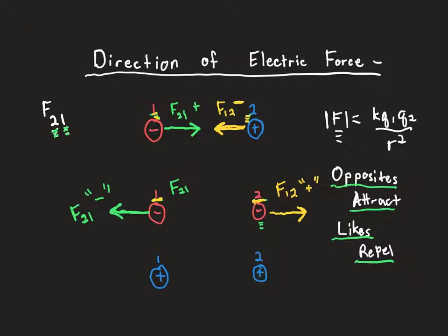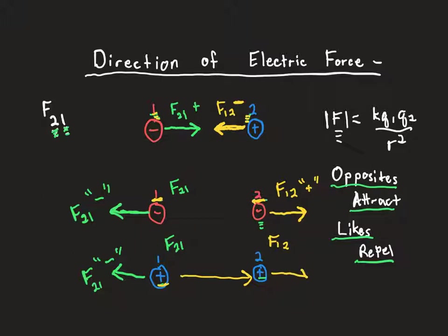We can do this with positive charges or any combination of charges. For the force of charge 2 on charge 1 when both charges are positive: they have the same sign, so they repel. Charge 1 is going to move away from charge 2, making the force of 2 on 1 a negative direction. For the force of charge 1 on charge 2, charge 1 pushes charge 2 to the right, which is customarily considered positive.